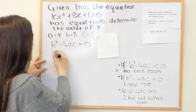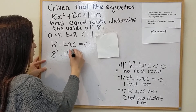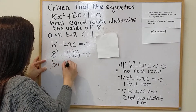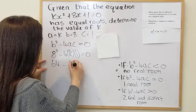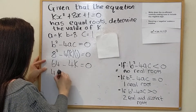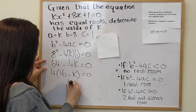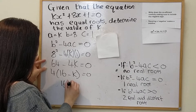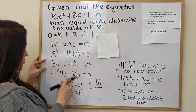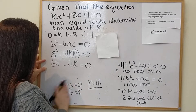Substituting in, we get 8 squared minus 4 times k times 1 equals zero. So 64 minus 4k equals zero. We can divide through by 4: 16 minus k equals zero, so k equals 16. Alternatively, you could bring 4k to the other side: 64 equals 4k, giving k equals 16.